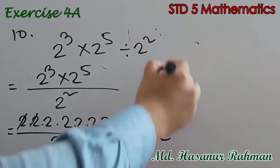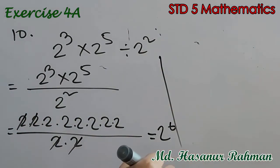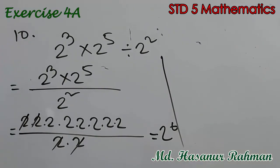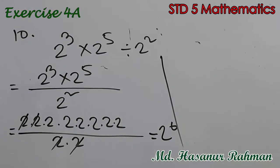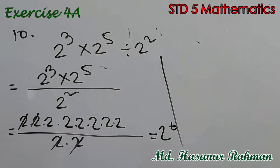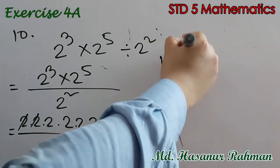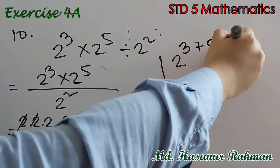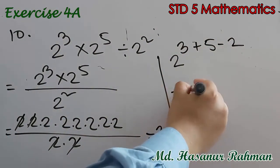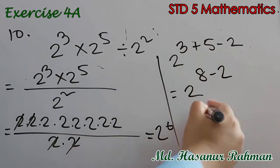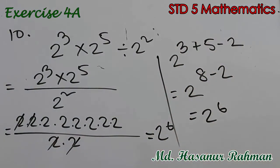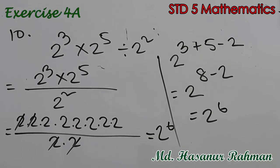After cancelling you get 2 to the power 6. Or you can solve this problem using the rules: if there is a multiplication sign we add the powers, and if there is a division sign we subtract. That means 2 to the power 3 plus 5 minus 2 — which is 8 minus 2 — so that is 2 to the power 6.